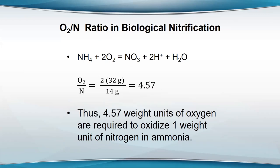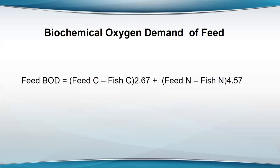Most of the oxygen is required for oxidizing carbon because there's a lot more carbon in the waste than there is nitrogen. That equation will give you the BOD of feed — if you take the amount of carbon in the feed, subtract off the carbon harvested in the fish and multiply by 2.67, then take the nitrogen in the feed, subtract the nitrogen in the fish and multiply by 4.57, that's the BOD of the feed if all that waste gets oxidized.